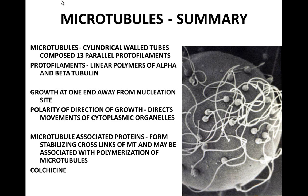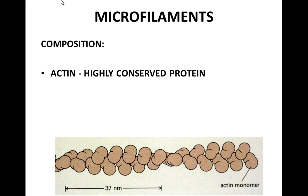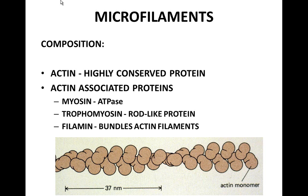Colchicine is one treatment that breaks down microtubules. Another cytoskeletal component is microfilaments, made of actin, a highly conserved protein like tubulin. Actin has associated proteins including myosin, the ATPase, and tropomyosin, which help make rod-like structures, bundles, or the mesh inside the cell. We see actin monomers lined up to make a microfilament.